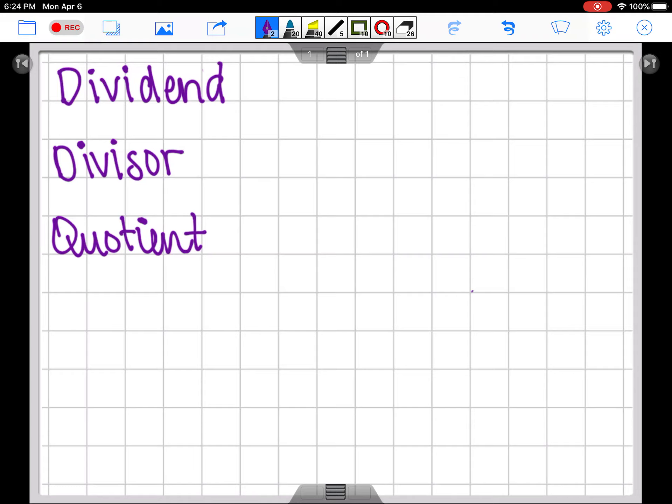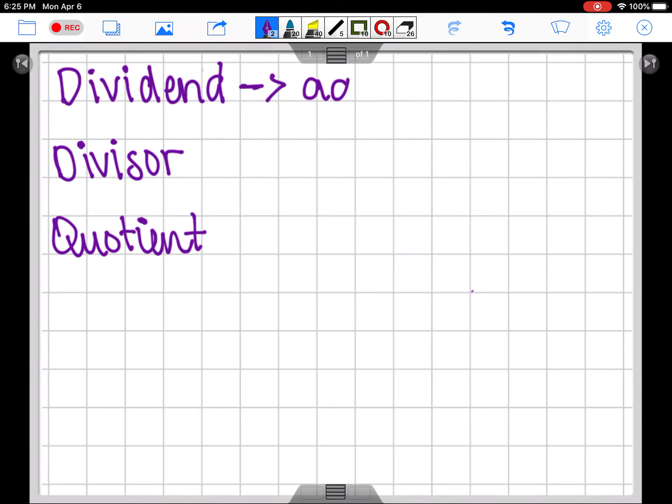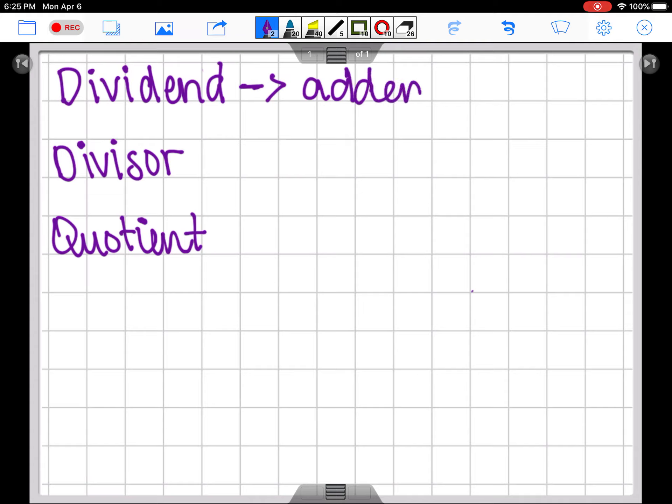All right, so you can see three words on my screen. This first word is dividend. The dividend in a division problem is the thing that is going to be divided. We could relate this word to addend. Addends in an addition problem are the numbers that get added together. In a division problem, the dividend is the one that gets divided.